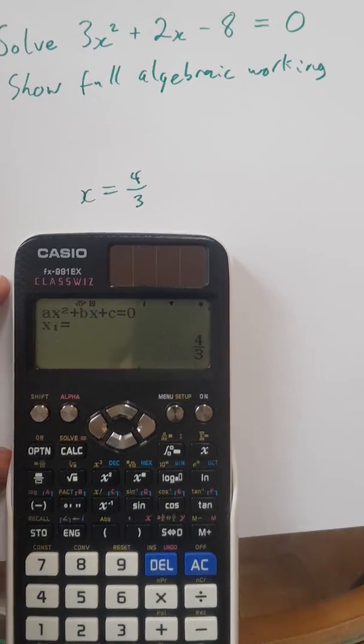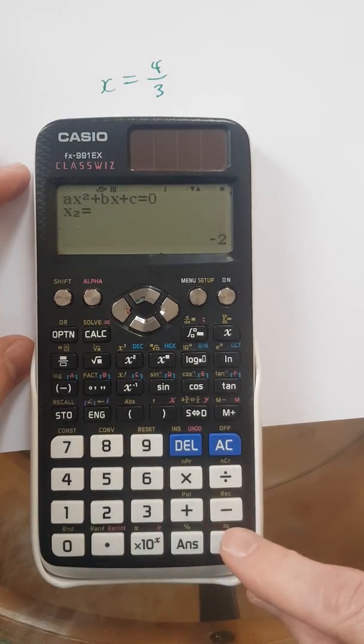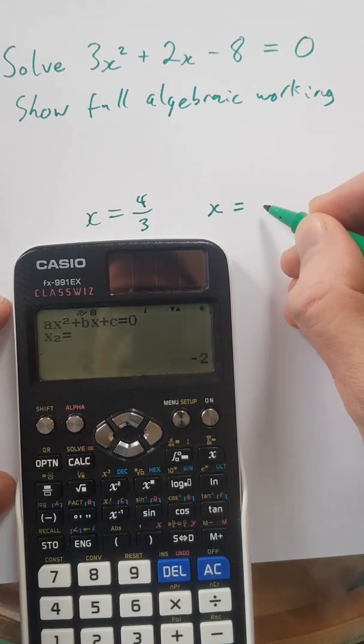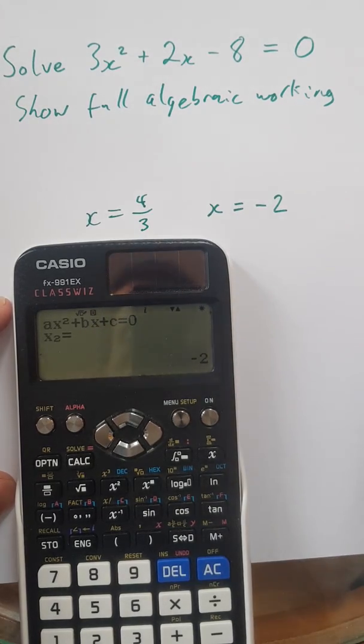And if we press equals again on the ClassWiz, it says x equals minus 2. So I'm going to write that over here as well. x equals minus 2.